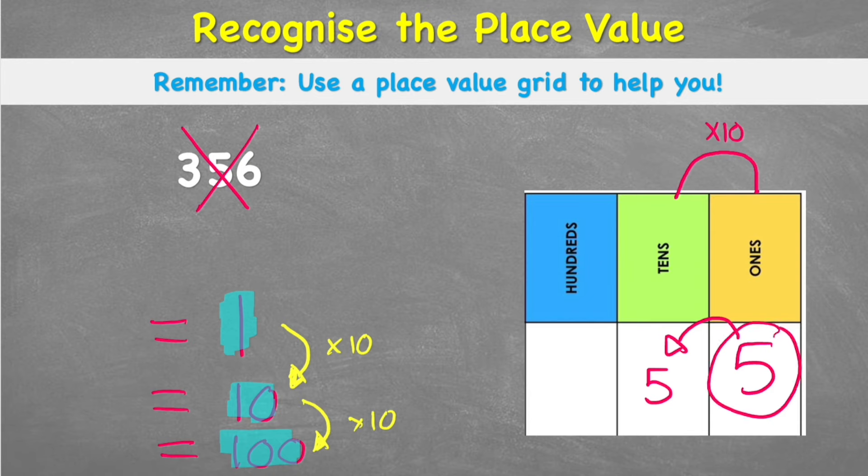Originally, it was just a 5, and then I've moved it into the 10s column, and it now equals 50, which is 10 times larger. And the same thing if I'm going from my 10s to my 100s column, it's 10 times larger. So if I move this 5 again into the 100s column, it becomes 500. 500 is 10 times larger than 50.